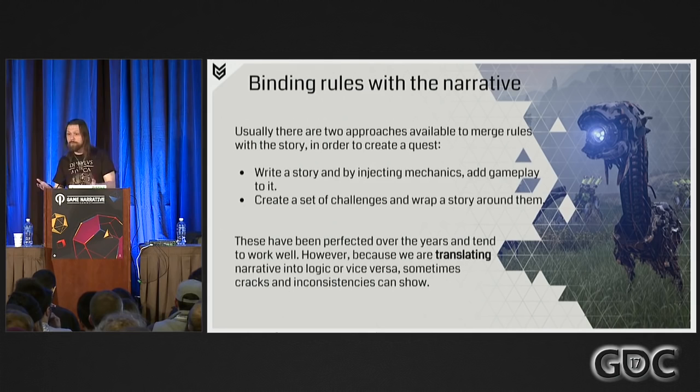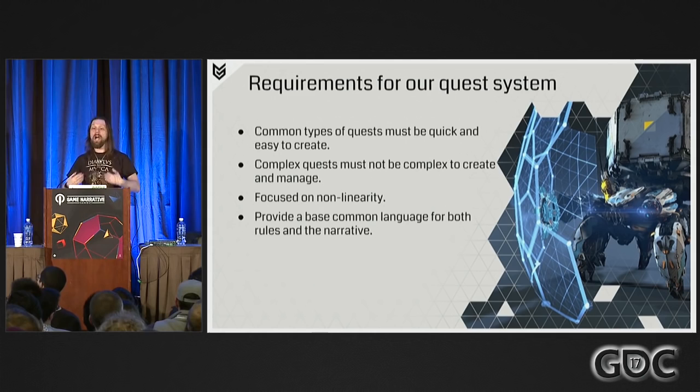Once we learned all that, we needed to decide what our quest system would look like, what kind of stories we would tell, and what tools we would need. We came up with four high-level requirements. First: common types of quests must be quick and easy to create. In any game, the most common content should be quickest to produce. In Horizon — an open-world game from the very start — this had additional meaning, as open-world games require a lot of content to create a feeling of a living, breathing world.